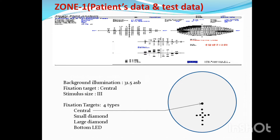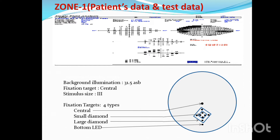We will be able to test the fixation target. The fixation targets are: one is central, one is small diamond, one is large diamond, and one is bottom LED. To test the macular threshold or foveal threshold, we use the small diamond with small stimulus lights and the small rhombus.